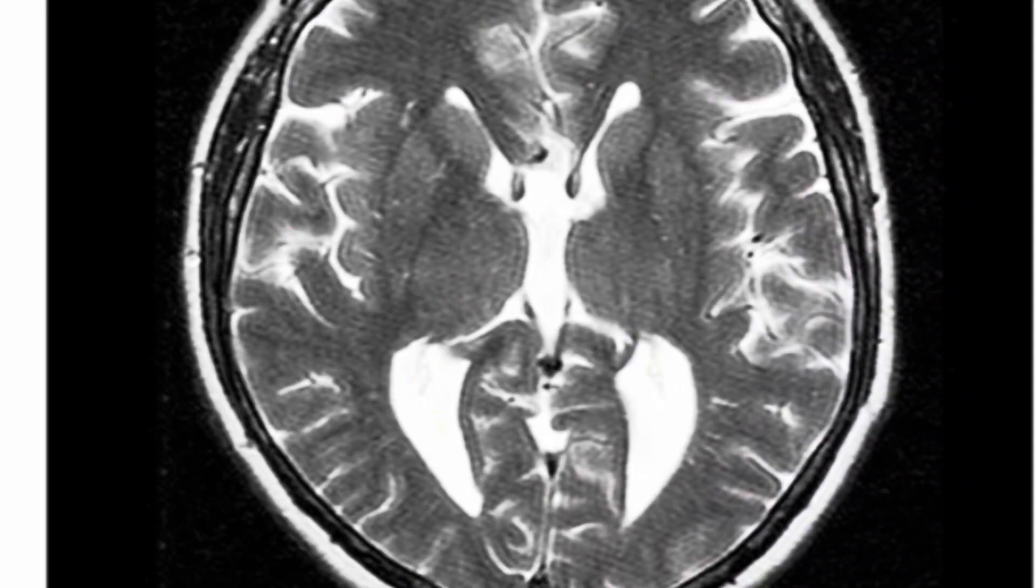And this is an example of the race car sign. The white areas are the ventricles, and you can see they've been pushed aside by the Probst bundles.